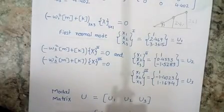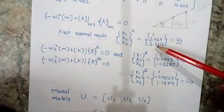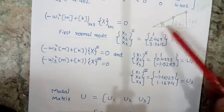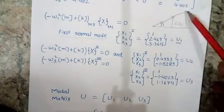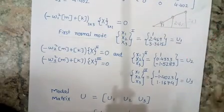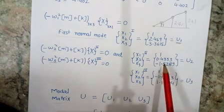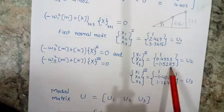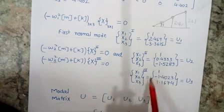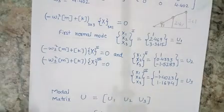Looking at the three eigenvectors, in the first normal mode all three values are positive, meaning all three masses move in the same direction. In the second normal mode, the first and second masses move in the same direction but the third mass moves in the opposite direction. In the third mode, the second mass moves in the opposite direction to the other two masses.